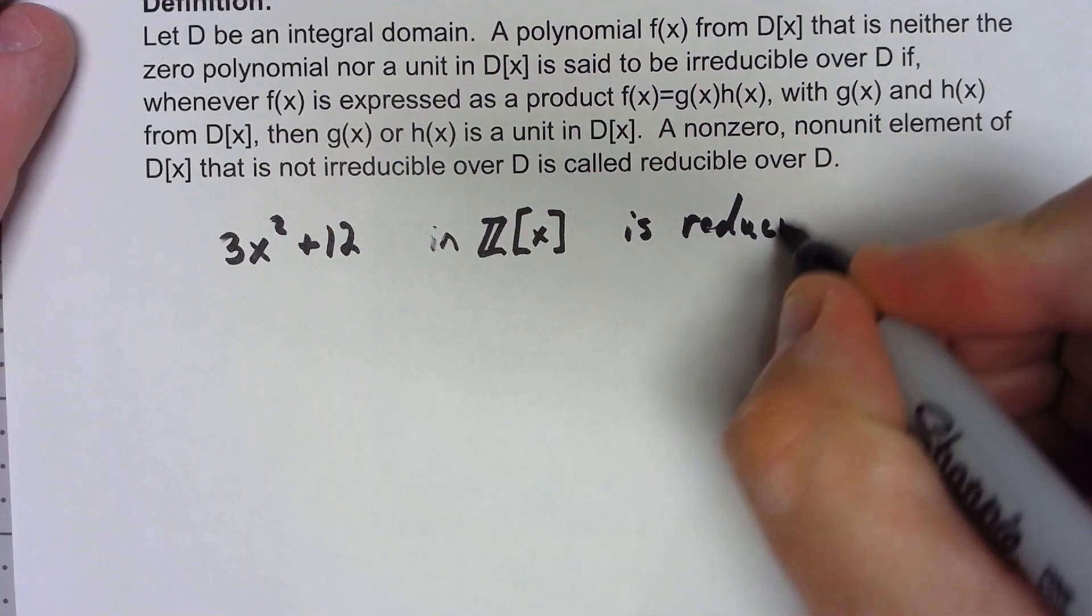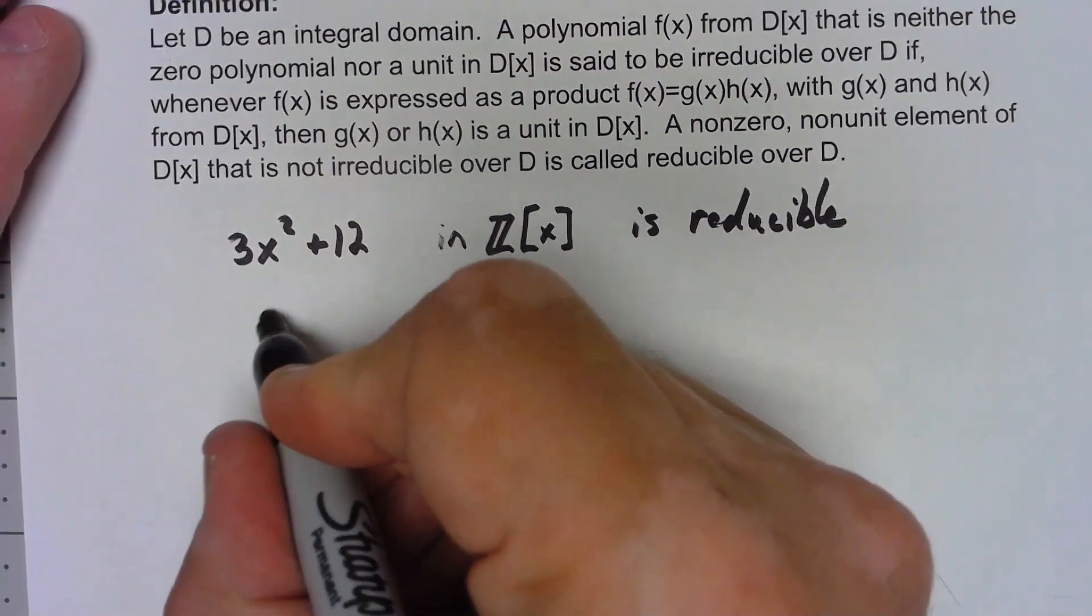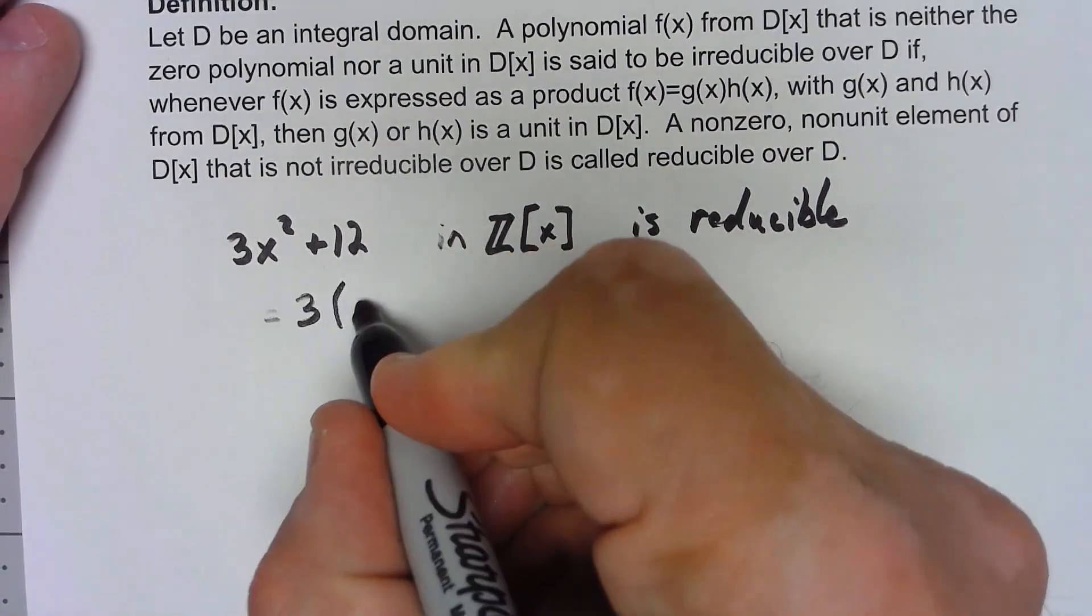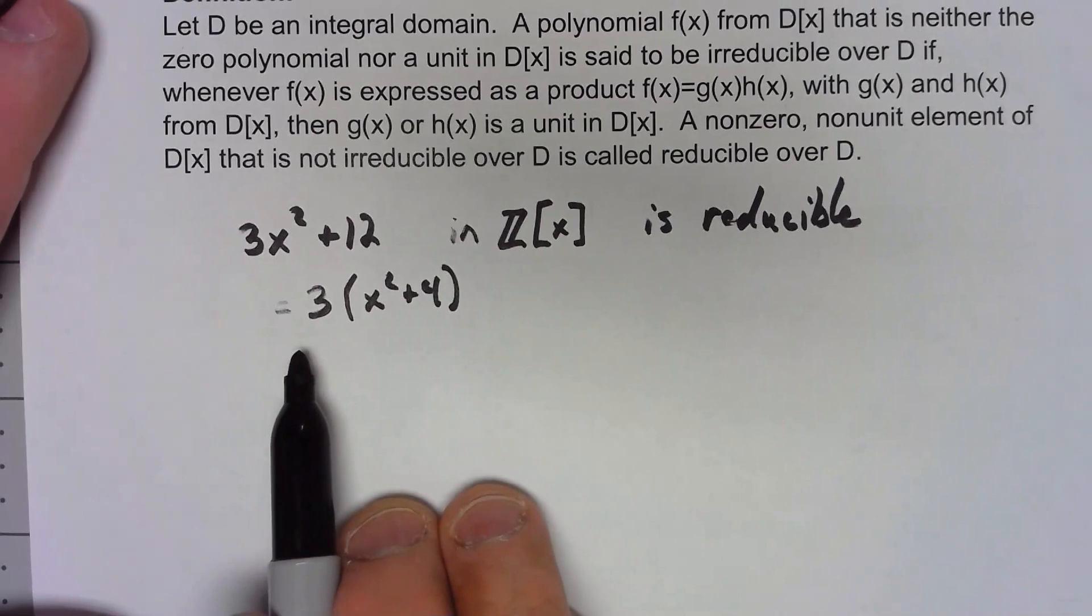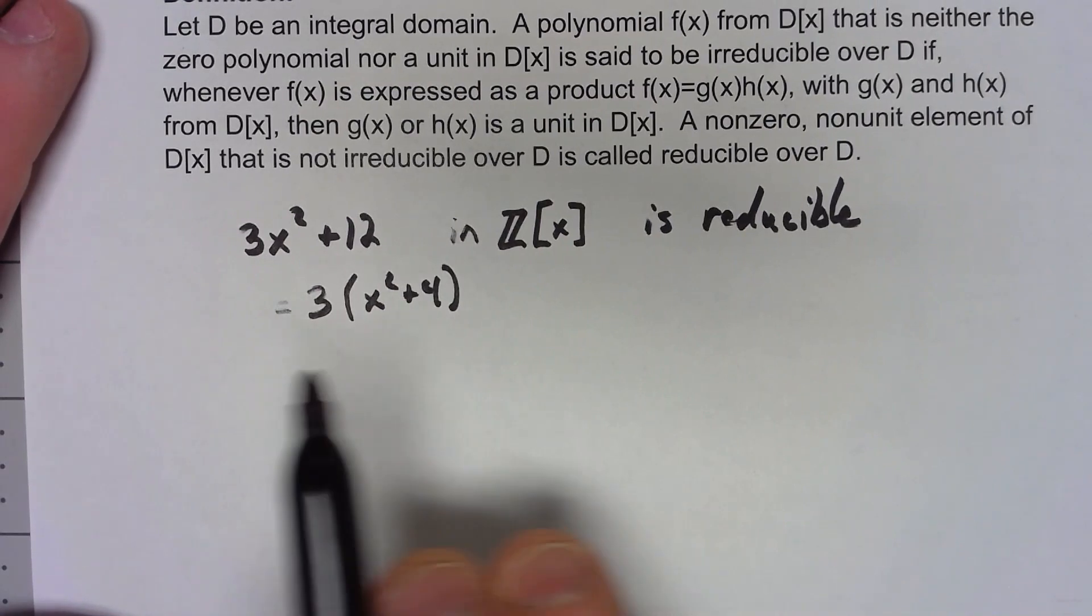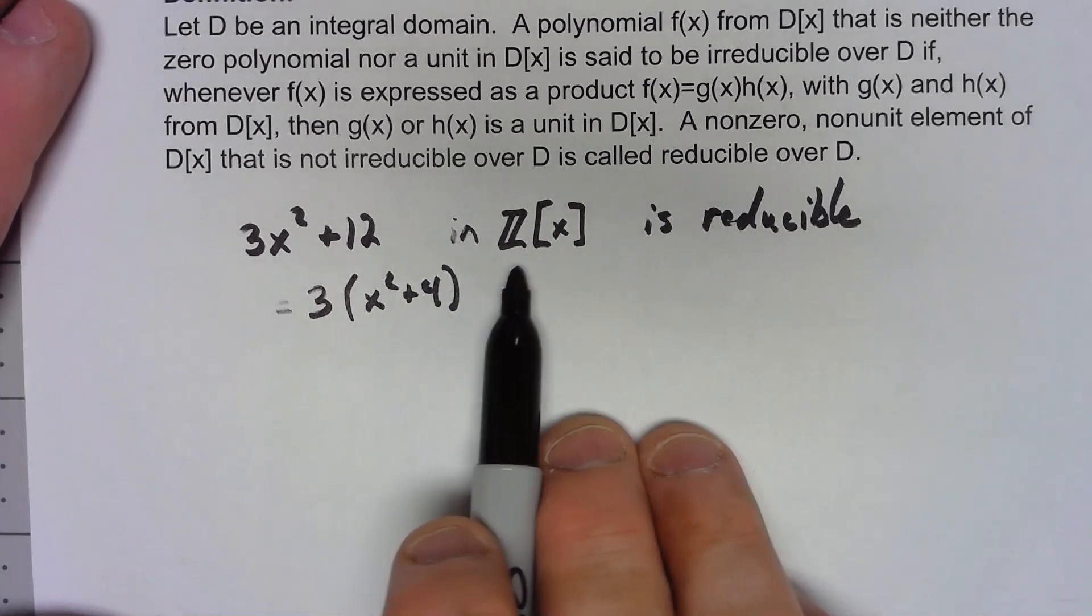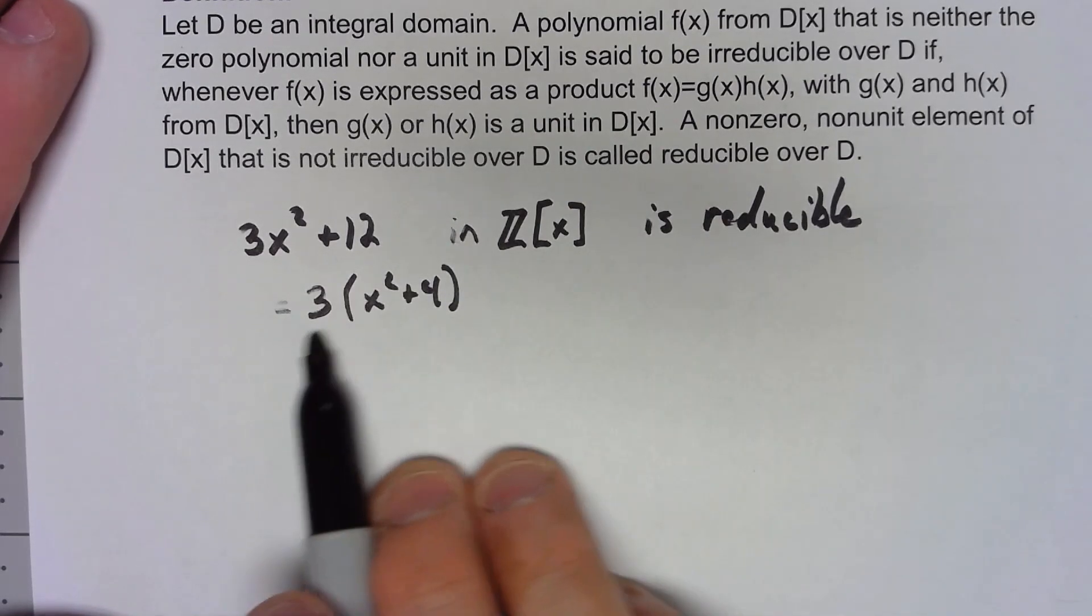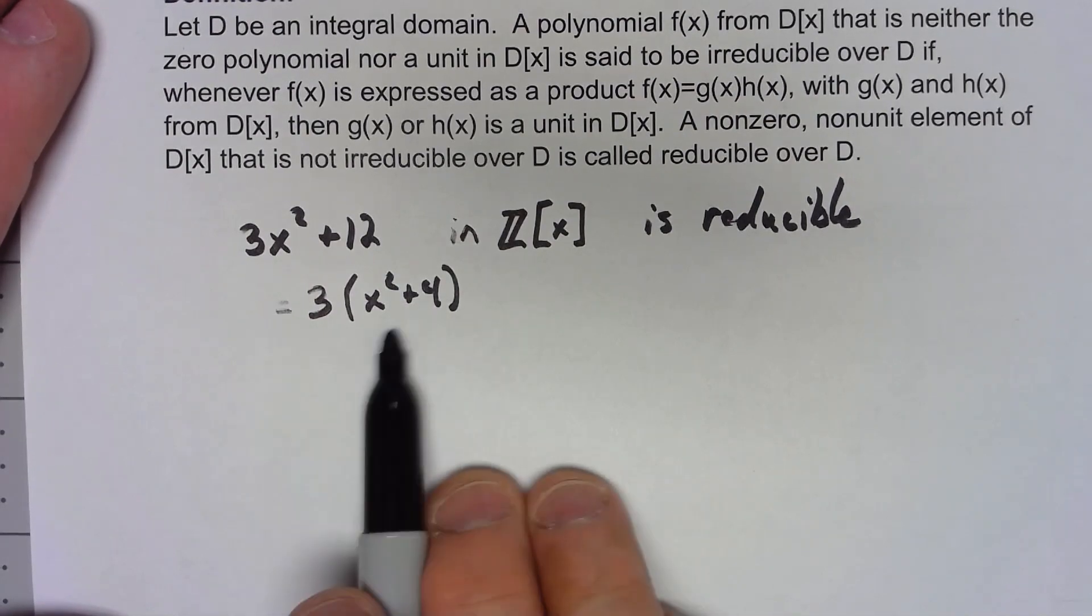Because I can factor this thing as 3 times x squared plus 4 and even though that's just a constant, 3 is not a unit in Z, in Z[x] actually, because 3 doesn't have a multiplicative inverse. So we've reduced it in what's in Z[x] a non-trivial way.